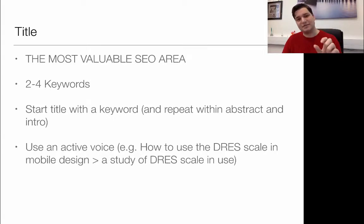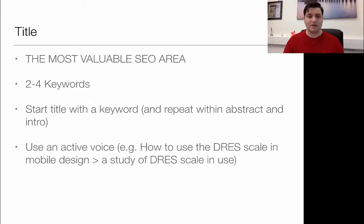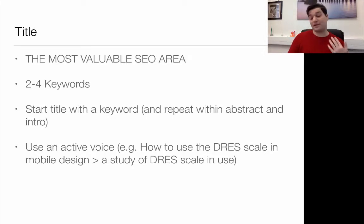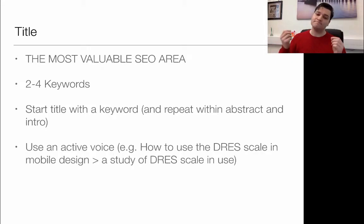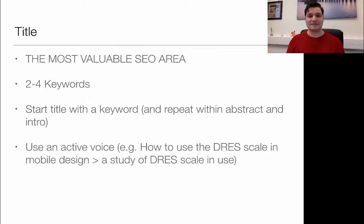Repeat your keyword in the abstract and the introduction. The rule of thumb is the first 55 words, because that's roughly where Google looks. When thinking about your title, you want to use an active voice. For example, 'How to use the DRES scale in mobile design' is much better for SEO and user engagement than 'A study of DRES scale and use.' Both are acceptable and describe what you're doing, but the first one works better.